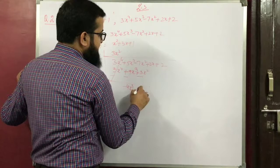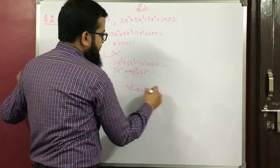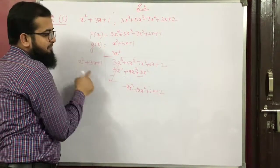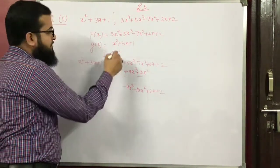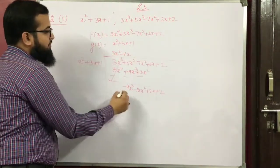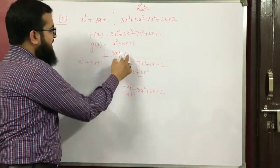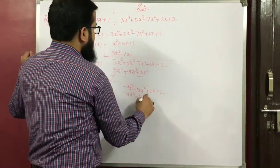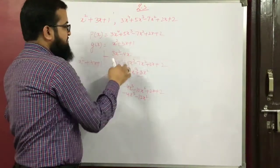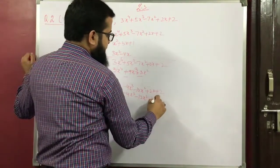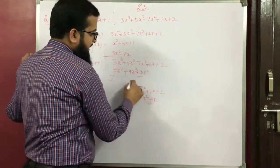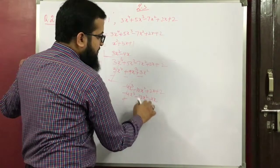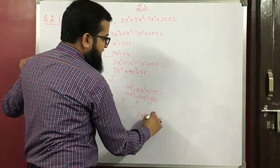Next, multiply g(x) by minus 4x to get minus 4x³. Minus 4x times 3x is minus 12x², and minus 4x times 1 is minus 4x. After changing signs: plus 12x² minus 10x² is 2x², and 2x plus 4x is plus 6x plus 2.